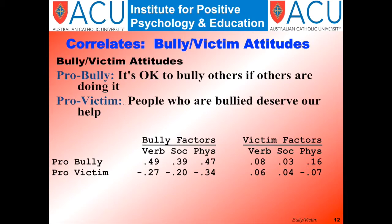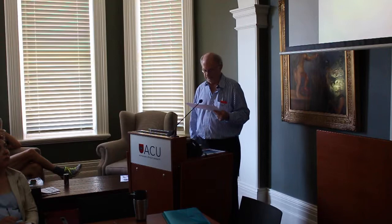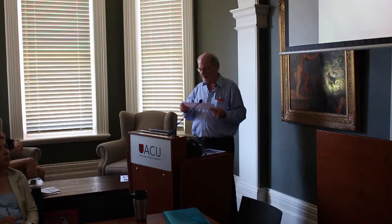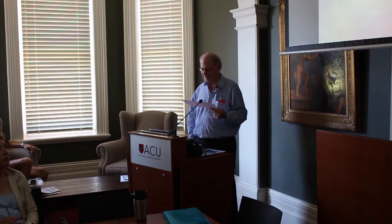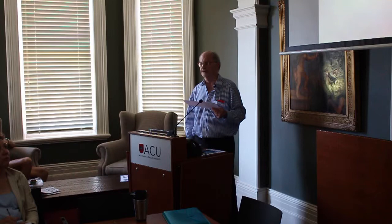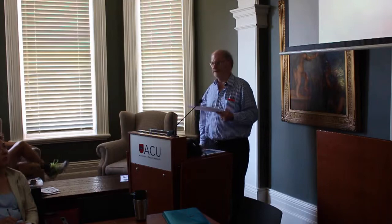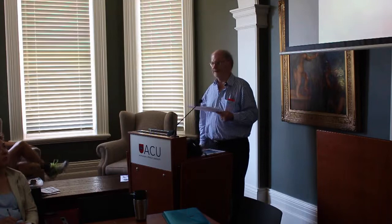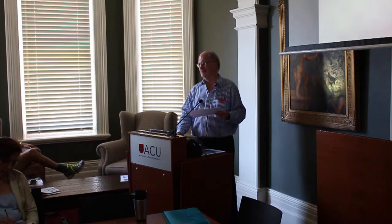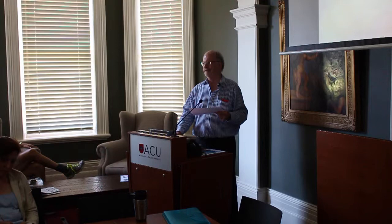The pattern of relations generally supported our expectations, but there were also a few surprises. Not surprisingly, bullying was strongly related to endorsing pro-bully attitudes and negatively related to pro-victim attitudes. More surprisingly, however, victim scores had a similar, although weaker, pattern of relations. Victim factors were weakly but positively related to pro-bully attitudes and nearly unrelated to pro-victim attitudes. Victims seem to identify with bullies more than they do other victims. Bullies and victims are surprisingly similar, and victims' profiles are more like bullies.